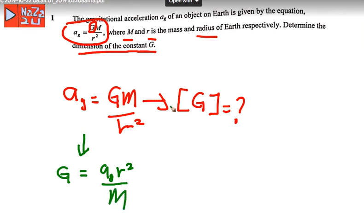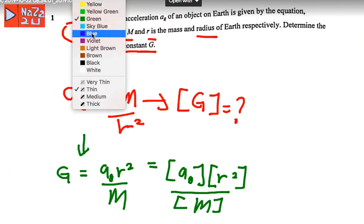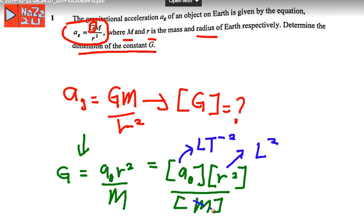Now you must find the dimension of the acceleration a, the dimension of the radius r squared, and the dimension of the mass m. The dimension for acceleration a is LT⁻², the dimension for the radius r squared is L², and the dimension for mass m is M.